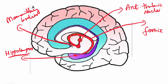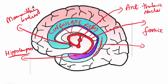From the anterior thalamic nuclei it will go, by the thalamocortical projection, to the cingulate gyrus. The cingulate gyrus — I am just highlighting this gyrus in green color — that is the cingulate gyrus. And from there, the bundle of white fibers, that bundle of axons, is known as the cingulum.